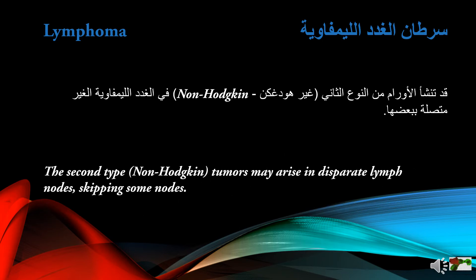The second type, non-Hodgkin lymphoma, is the most common of the two. In this type, tumors may arise in disparate lymph nodes, skipping some nodes.